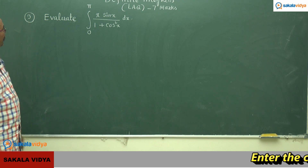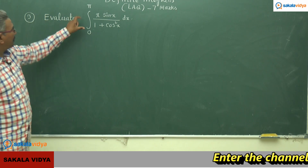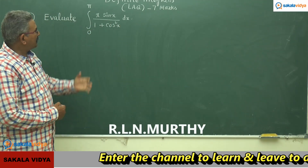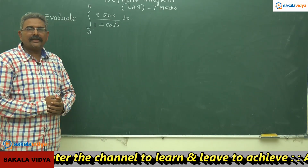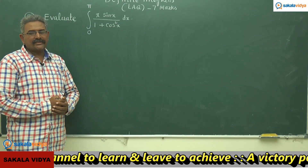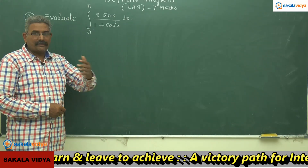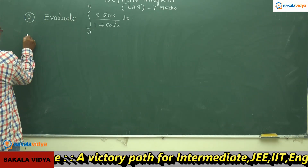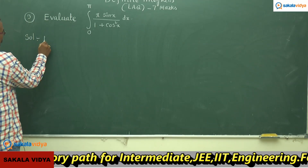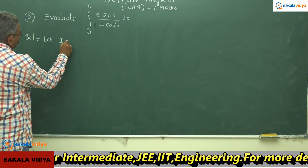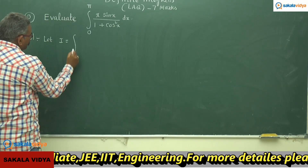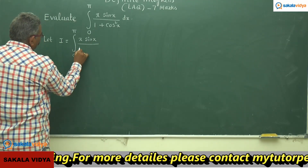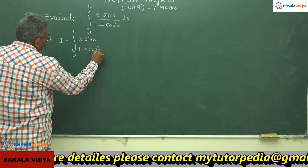Let us solve one more problem. Evaluate the integral from 0 to π of x·sin(x) / (1 + cos²x) dx. This problem can be done using the property: integral from 0 to a of f(x) dx equals integral from 0 to a of f(a - x) dx. Let us say I equals the integral from 0 to π of x·sin(x) / (1 + cos²x) dx.